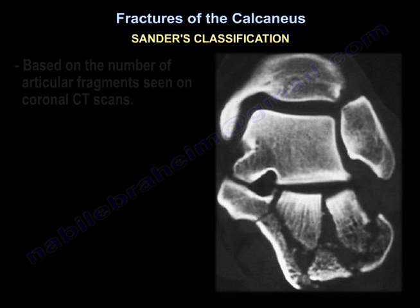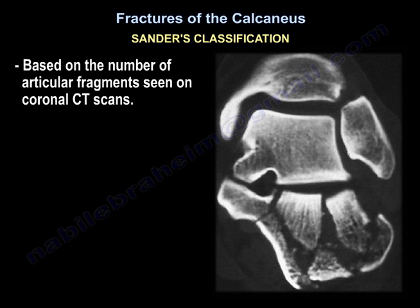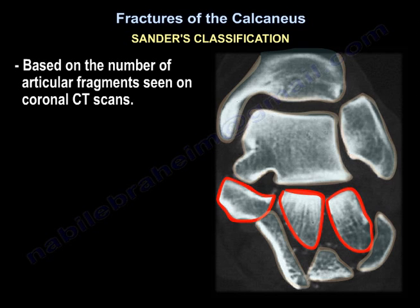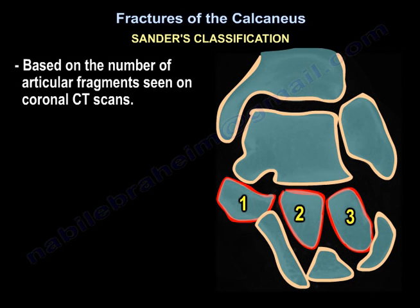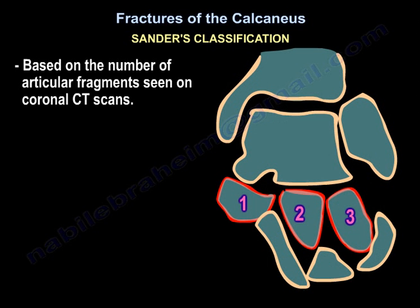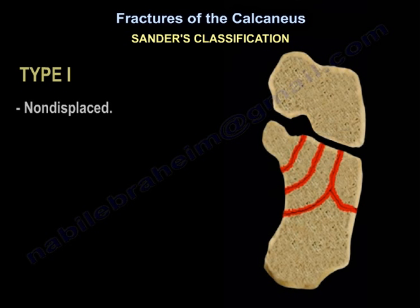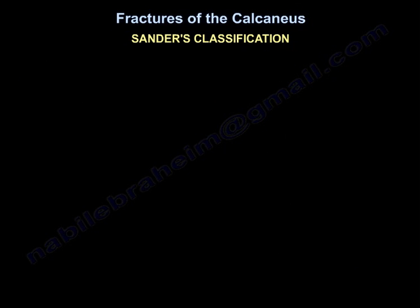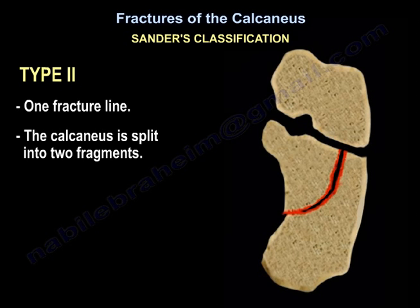Sanders classification is based on the number of articular fragments seen in coronal CT scans. Type 1 is non-displaced. Type 2 has one fracture line — the calcaneus is split into two fragments.